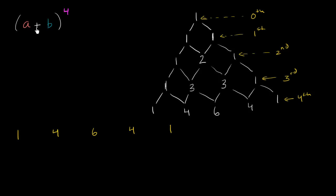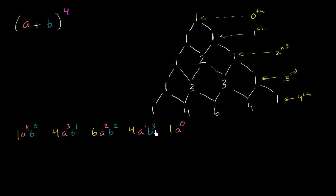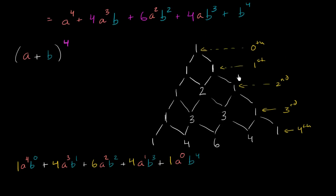Now, how do I know what the powers of a and b are going to be? I start a at the highest power — a to the fourth — and then go down: a to the fourth, a to the third, a squared, a to the first, and a to the zero, which is just one. For b, I start at the lowest power — b to the zero — then b to the first, b squared, b to the third, and b to the fourth. Then I just add those terms together, and there you have it — the expansion of a plus b to the fourth power.